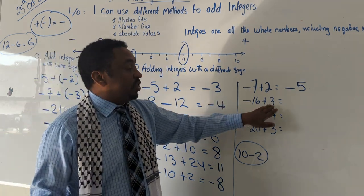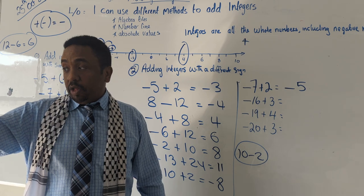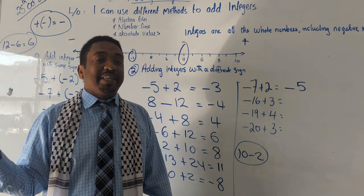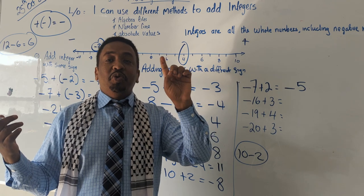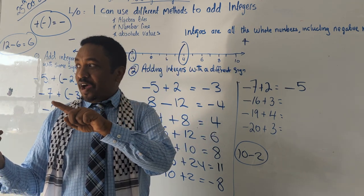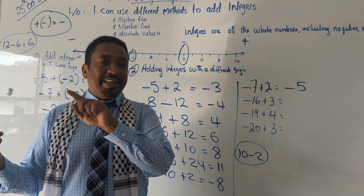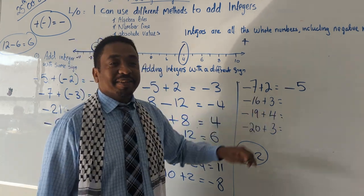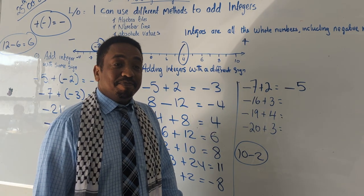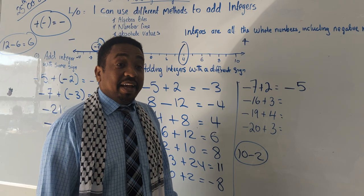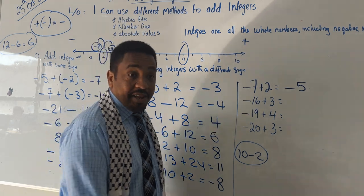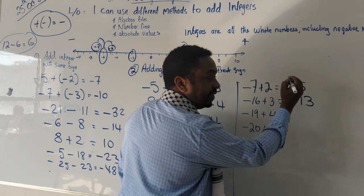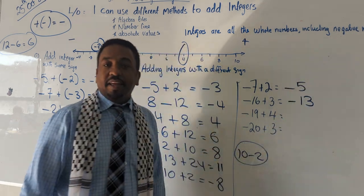I want everyone to put their hand up if they can give me the next answer. I count eight hands. Aliyah — what would the answer be? Negative 13. Well done Aliyah! Because the big number is with the negative, so the answer will be negative 13.